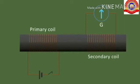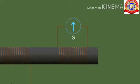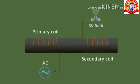When we turn on the switch of the primary coil, we can see the galvanometer in the secondary coil shows deflection to one side and comes back to its original position. Then when we turn off the switch of the primary coil, we can also see the deflection of the galvanometer in the opposite direction. Here you can see AC instead of DC in the primary coil and a six-volt bulb in the secondary coil instead of a galvanometer. When the switch is on, we can see the bulb glows continuously.